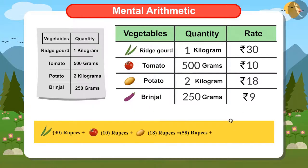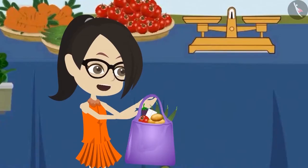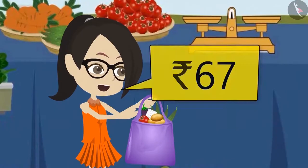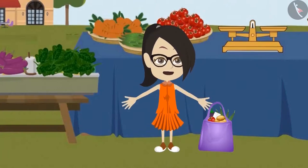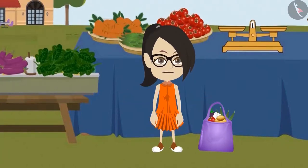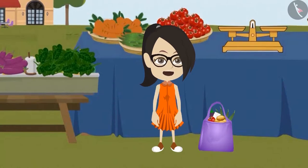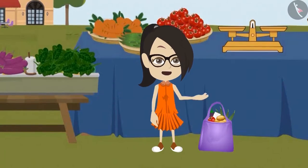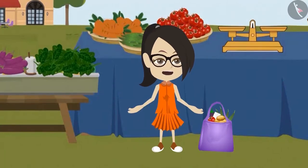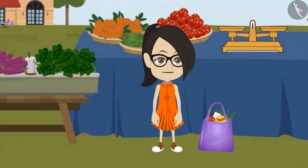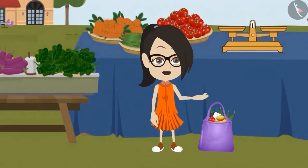Now I will add 9 rupees to 58 rupees. The answer is 67 rupees — this means all these vegetables are worth 67 rupees. Oh wow! I too calculated the total price of all vegetables without paper and pen. Now I understand how remembering multiplication tables and knowing multiplication and division make calculations easier!